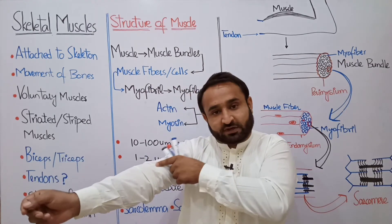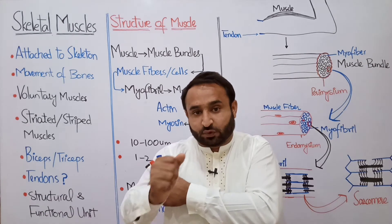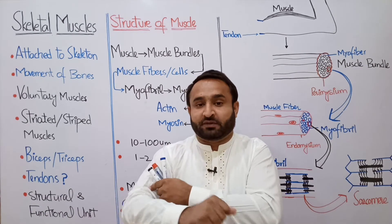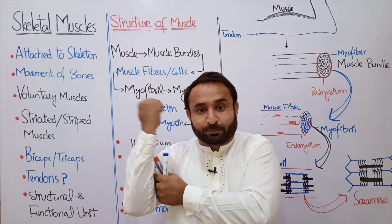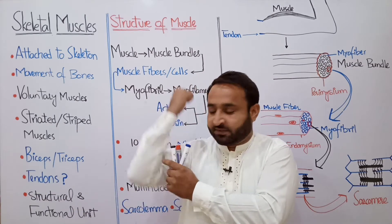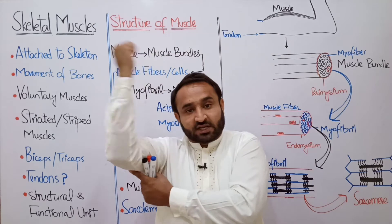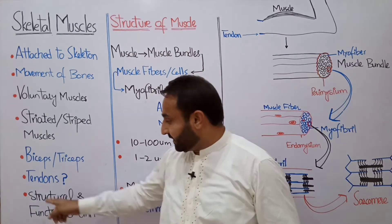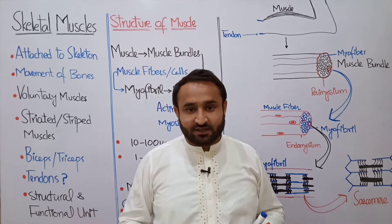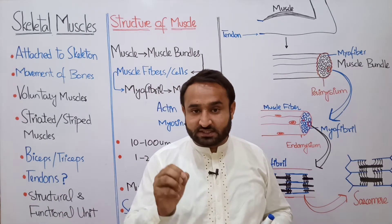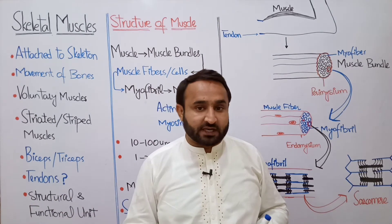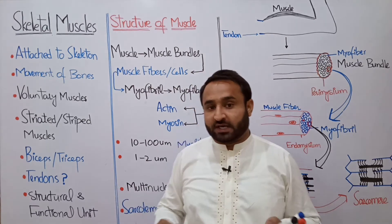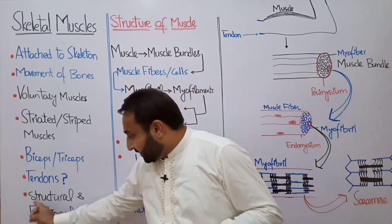Examples: Biceps are the upper arm muscles. Biceps cause flexion of the forearm. Triceps cause extension of the forearm. Tendons are collagenous, non-elastic fibers made up of connective tissue which connect a muscle with the bone and are called tendons.